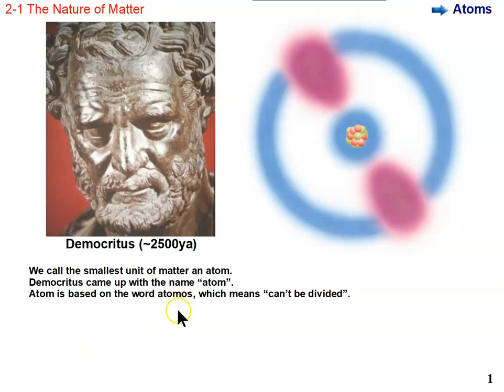It's based on the word atomos, which means can't be divided. Now we know that's not true, that you can split the atom, and atoms are made up of these things called subatomic particles. But atoms are really, really small. A hundred million will make a row about one centimeter long. That's really small.